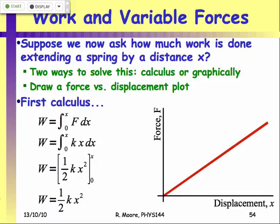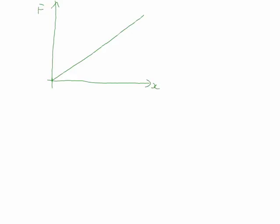We have a force versus displacement plot that is a nice straight line. When we have zero displacement, we have zero force. When we have a finite displacement, we've got a linearly increasing force. This is force on the y-axis and displacement on the x-axis, and this is simply F equals kx from Hooke's Law. We can take the area under this plot to calculate the work done.